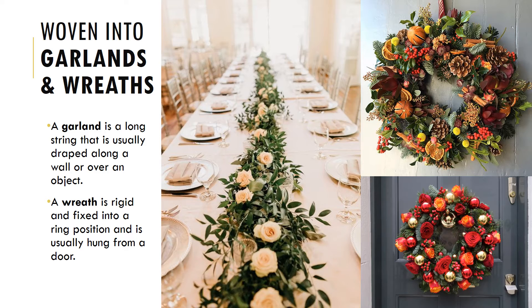The second form is garlands and wreaths. A garland is more flexible and can be shaped into different forms like lines or curves — commonly seen at weddings and birthday celebrations. A wreath is more rigid and fixed, usually shaped into a circle and hung onto a door, commonly seen during Christmas. Here is an example of a garland laid onto a table at a wedding ceremony, and a Christmas-themed wreath hung onto a door.